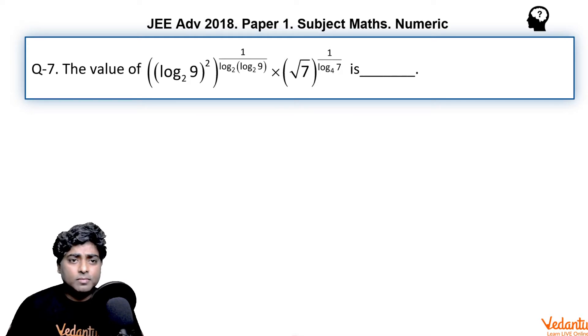The question asks for the value of (log₂9)² raised to the power 1/(log₂(log₂9)), multiplied by √7 raised to the power 1/(log₄7).